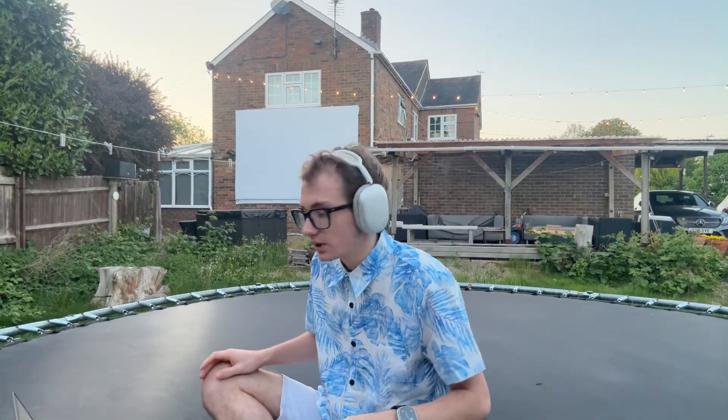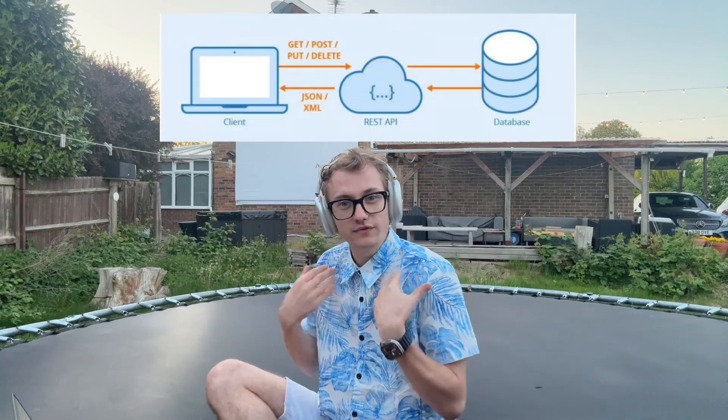An API stands for Application Programming Interface. I've actually got one here — I've got my prompter on my camera, and using this other device it's sending an API request to that device to allow the prompter to scroll. Essentially, an API is a standardized way for device A to talk to device B — a bit like a common language.